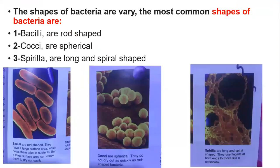The shapes of bacteria vary. The most common shapes of bacteria are bacilli, cocci, and spirilla. Bacilli are rod-shaped. Cocci are spherical shaped. And spirilla are long and spiral shaped.